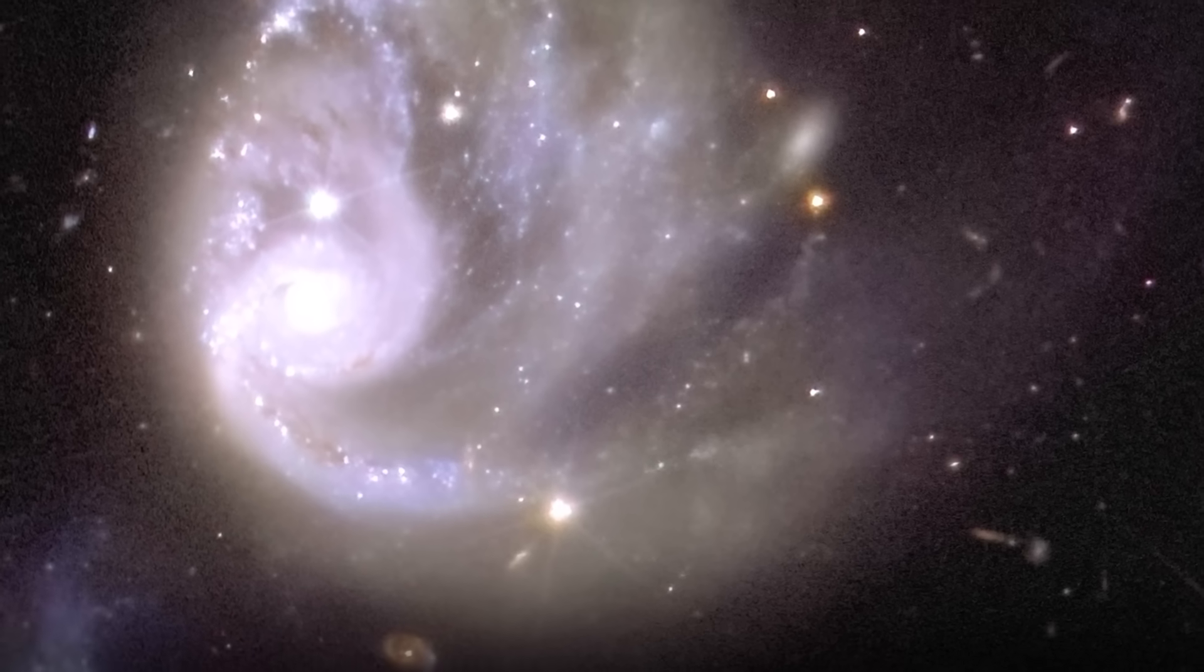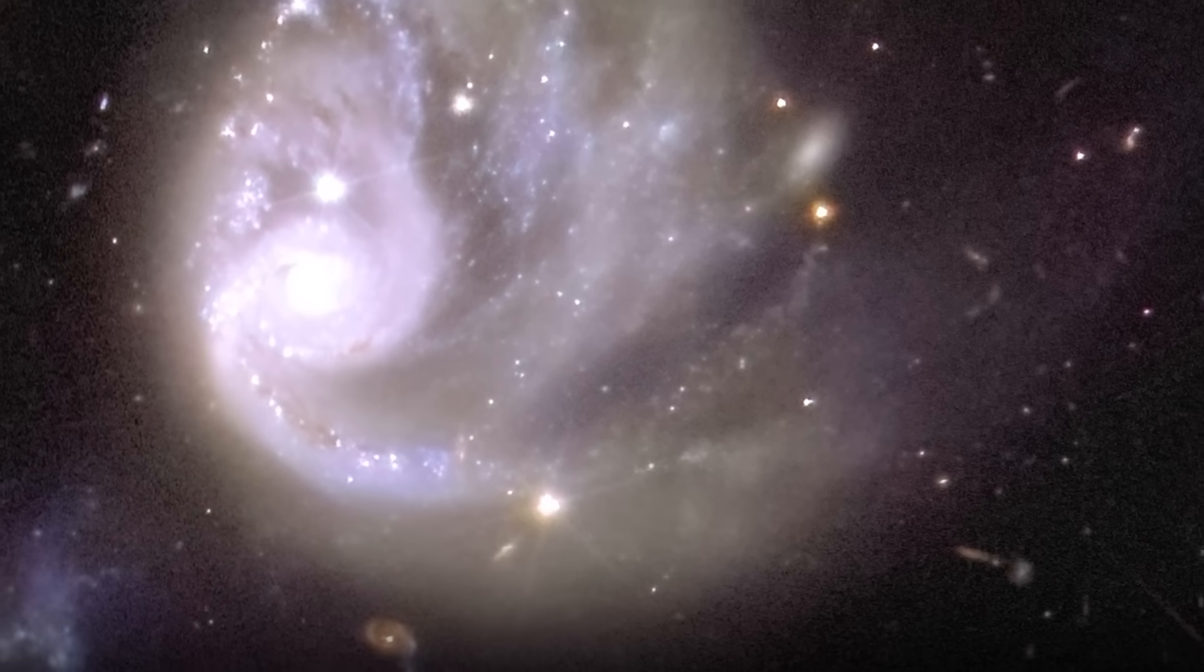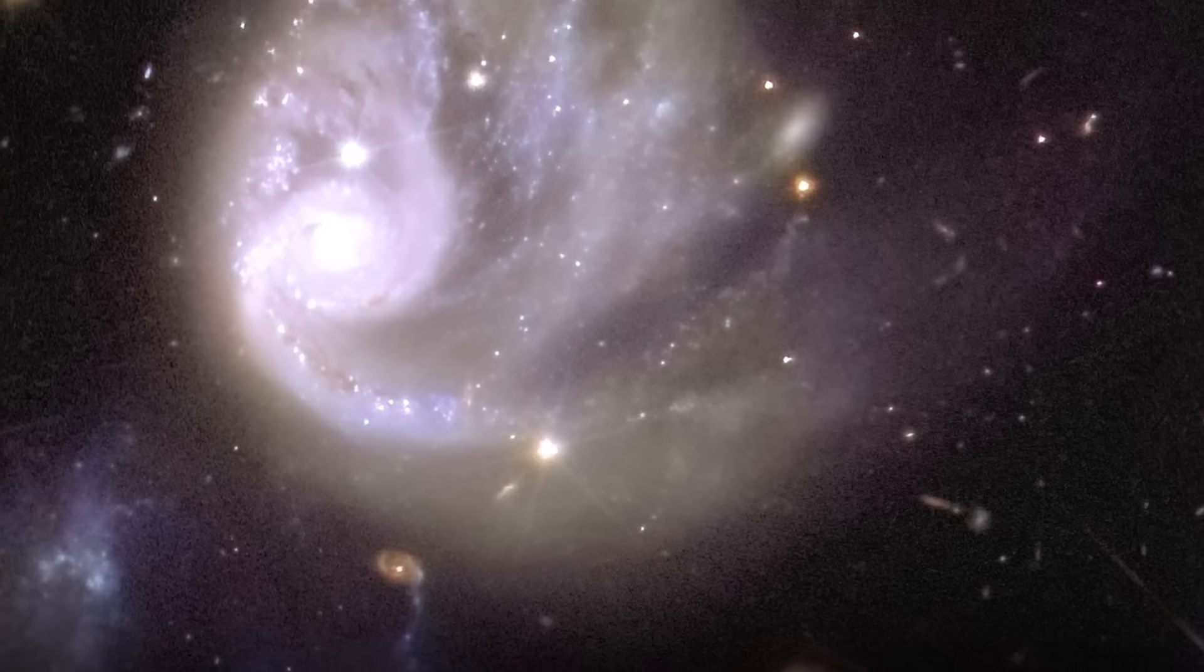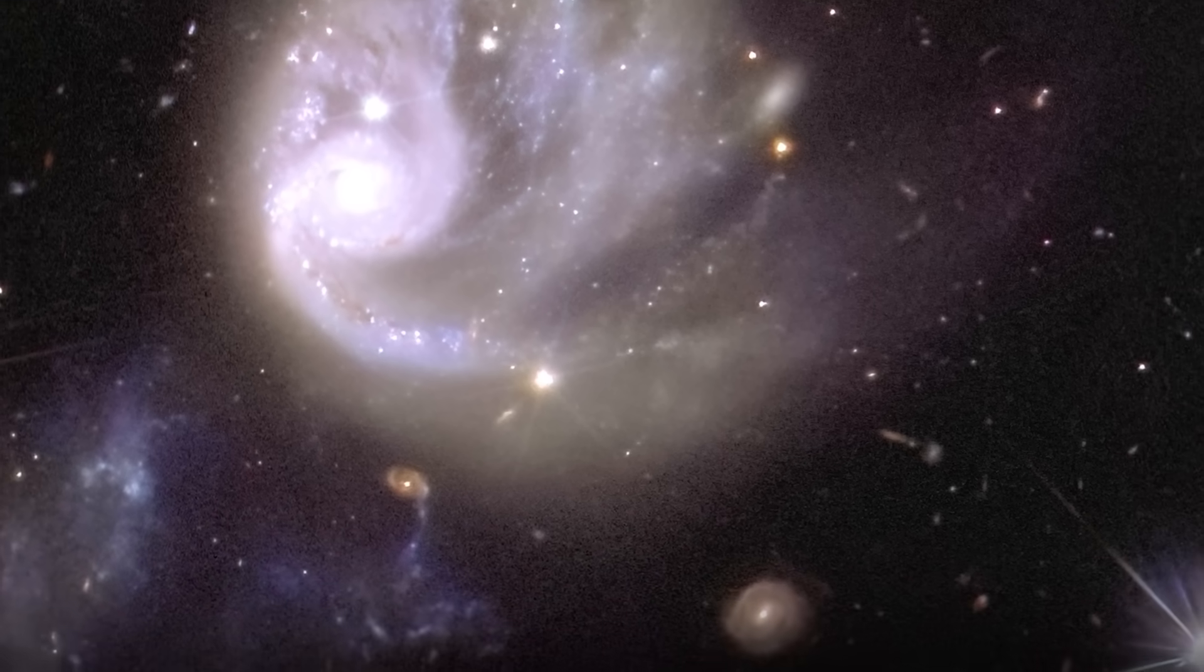If you zoom in 600 times, you'll find a crisp view of a swirling spiral galaxy.